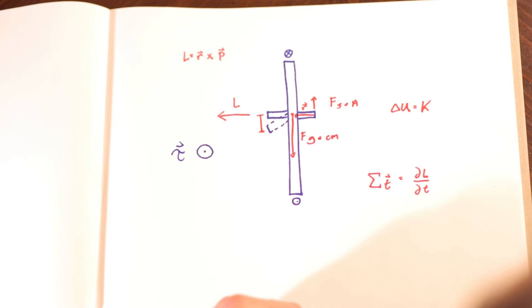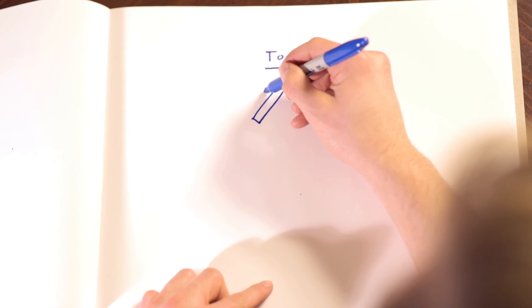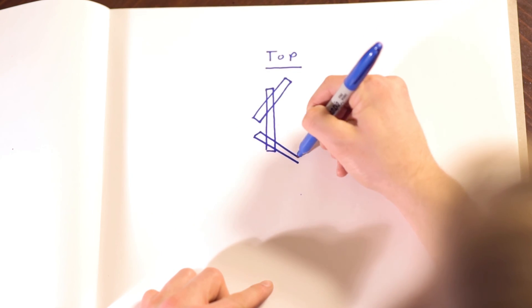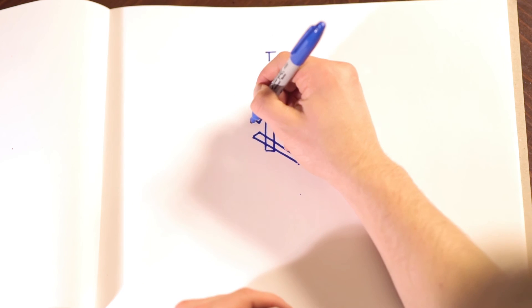To understand how the force of the string on the axle increases to the point where it can overcome gravity, we have to look at a diagram of the top view of the wheel. The three positions of the wheel represent a position before the present, in the present, and after the present, as labeled 1, 2, and 3 respectively.